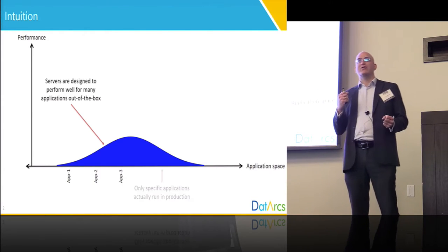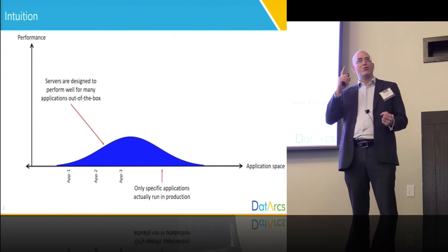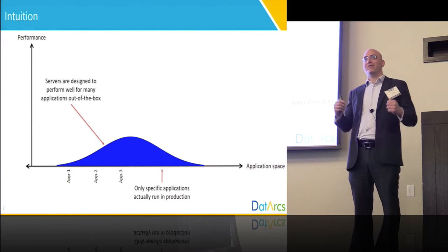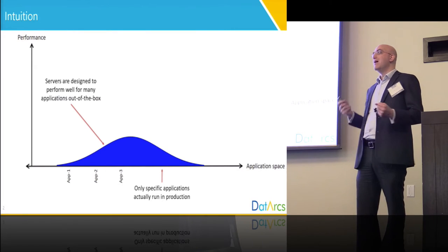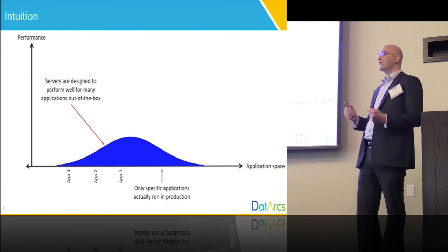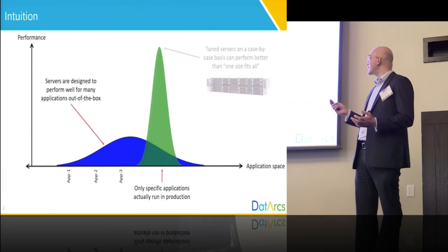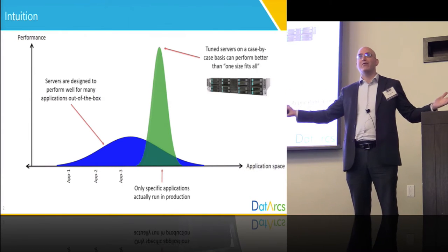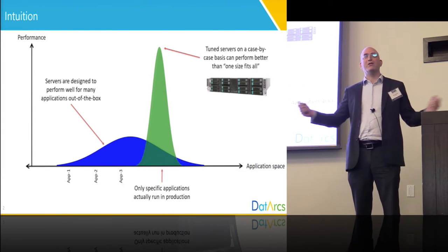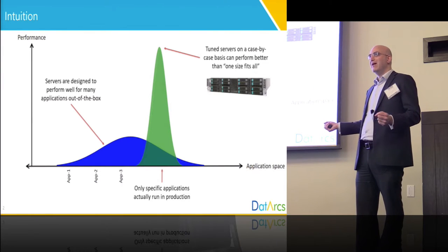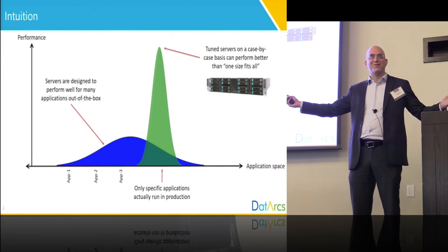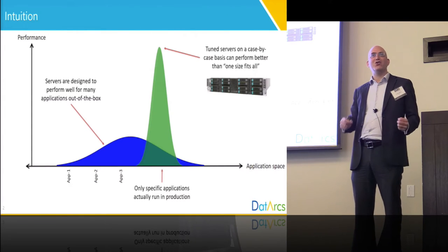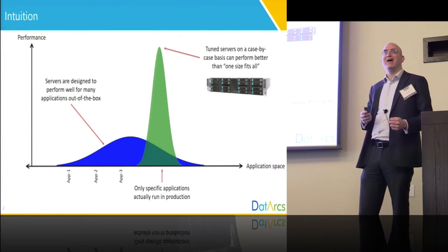But when the customer receives a server, the customer runs only one application and couldn't care less about the performance for the other applications. So the intuition is that if we focus on this one application and let go of the limitation of having to work well on the other applications, then we can get better performance. And this is the reason why tuning works. If there is one takeaway from this presentation, I would like that to be this slide.